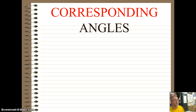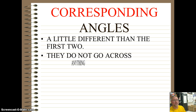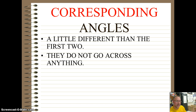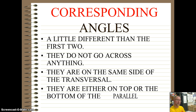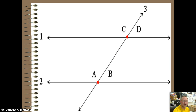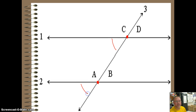The last one is corresponding, and they're a little tougher. They do not go across the transversal — you're not flipping back and forth. They're on the same side of the transversal, and they're either on top of the parallel lines or on the bottom. So angle C is corresponding to angle A, and angle B is corresponding to angle D. They're on the top and on the same side. Again, same side, top or bottom of the parallels.